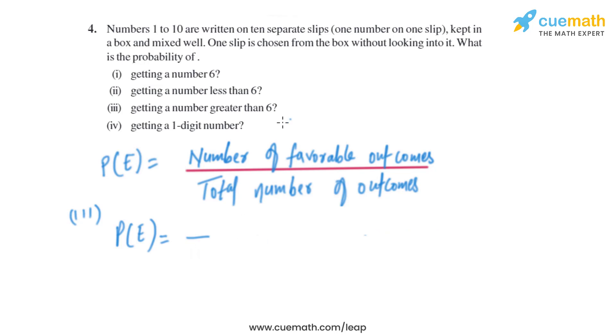Now let's have a look into the third part: getting a number greater than 6. A number greater than 6 are 7, 8, 9, 10. So there are 4 favorable outcomes divided by the total number of outcomes, that is 10. So on simplifying it, we will get 2 by 5.